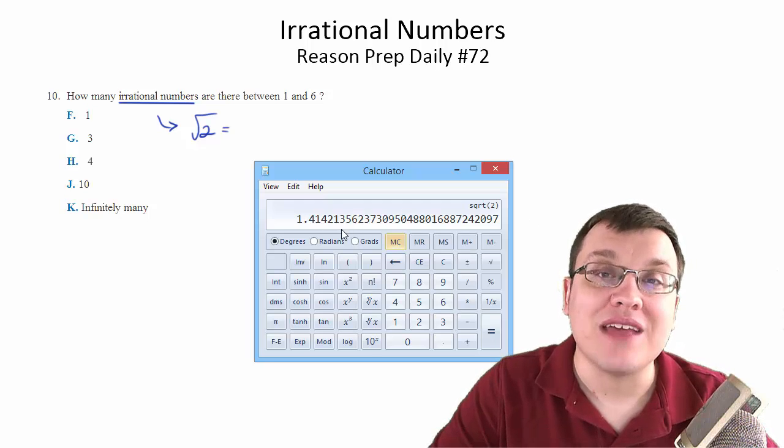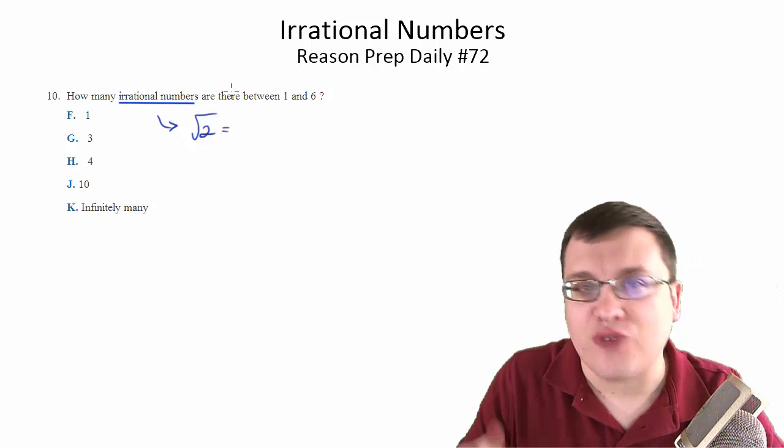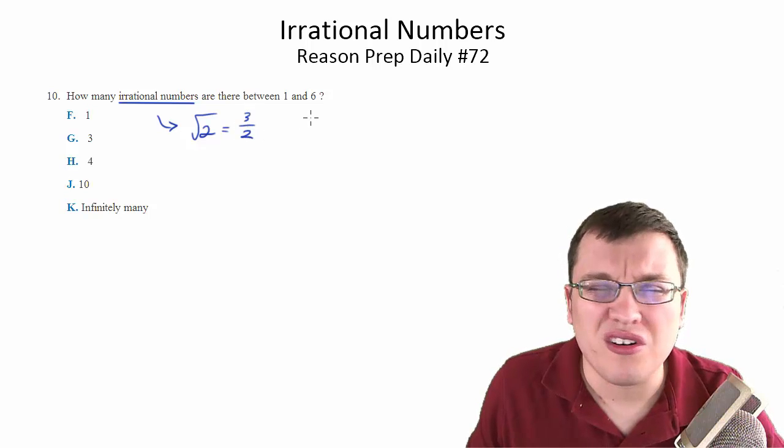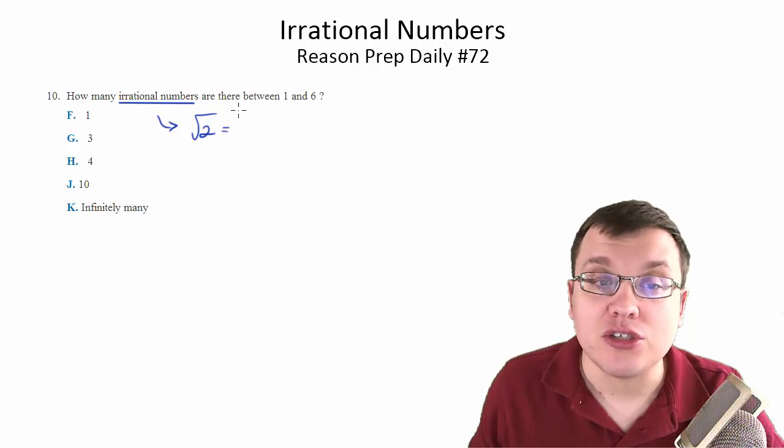You cannot represent this as a fraction. You can't write the square root of 2 as a fraction of integers. You can't write this as 3 over 2. There's just no way to write this as a fraction just using integers. So that's what makes this an irrational number.